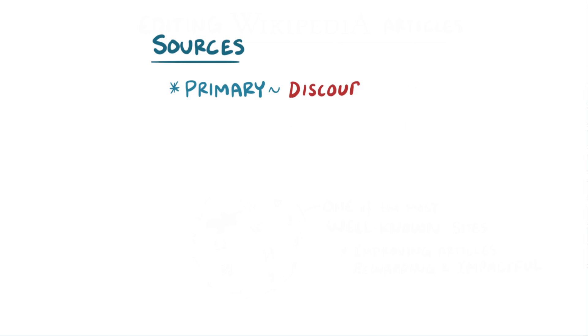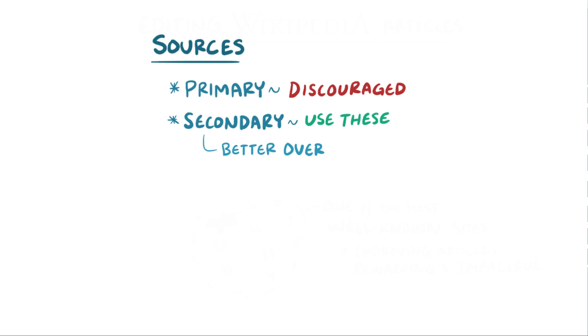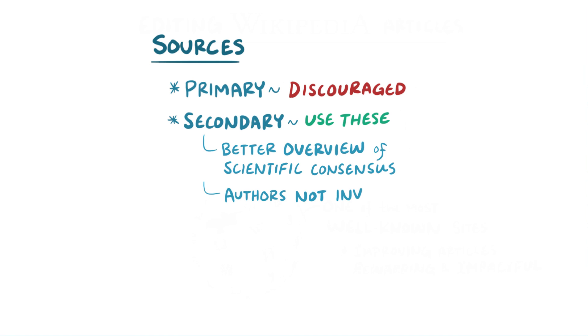Now, it's important to know which sources to draw from. Use of primary sources is typically discouraged. Traditionally, Wikipedia editors turn to secondary sources, as these often give a better overview of scientific consensus on a topic. Secondary sources are written by individuals not directly involved in a study, and they include pieces like literature reviews or systematic reviews.